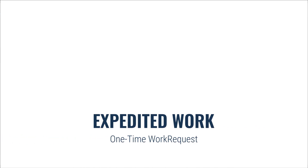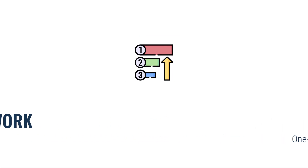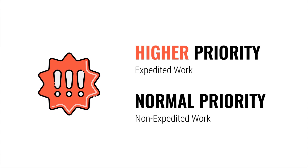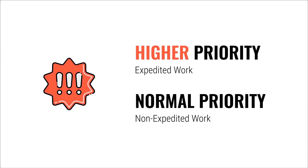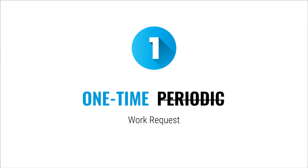In this video I am going to fully introduce you with a special type of work called expedited work. The main thing about this work is that it has a higher priority or importance level when compared to regular non-expedited work. It belongs to the one-time work request and it cannot be used inside a periodic work request. It is mostly used when executing and triggering some logic that needs to run immediately without a delay.